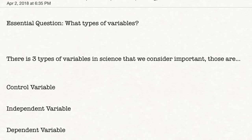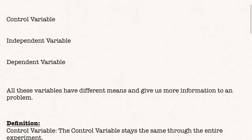There are three types of variables in science that we consider important and those are control variable, independent variable, and dependent variable. Sorry for the background noise, thunder, so much stuff is happening, so sorry.